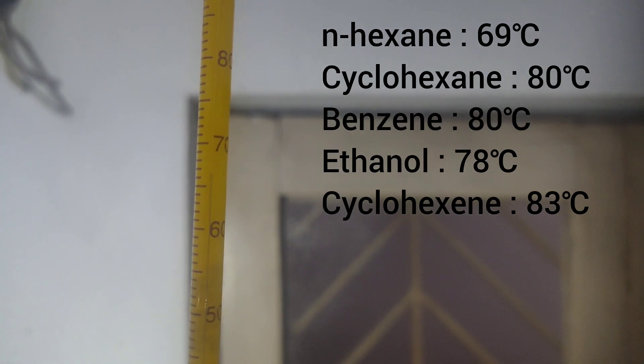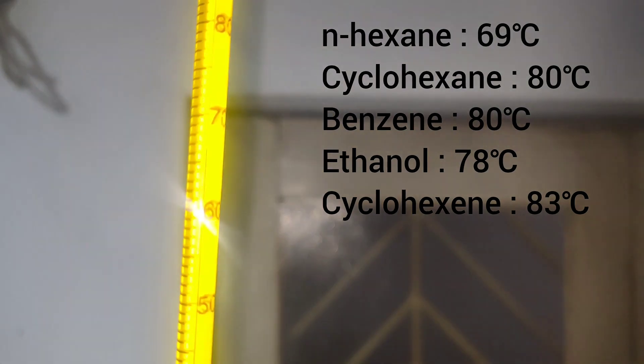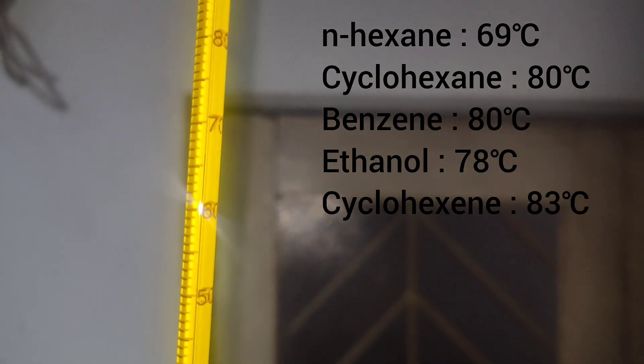And increased the temperature of heating mantle. Now, I collected everything that came around 65 to 80 degree celsius. This fraction contains nhexane, cyclohexane and benzene.